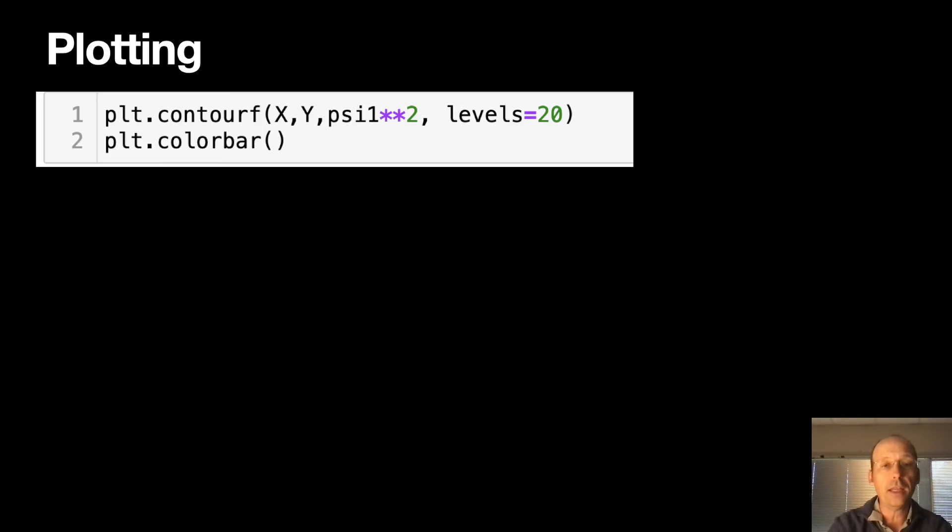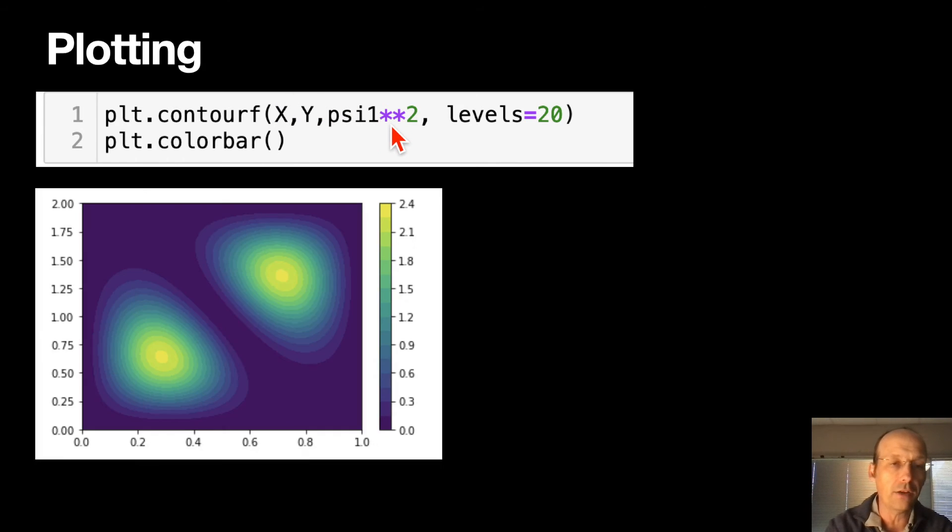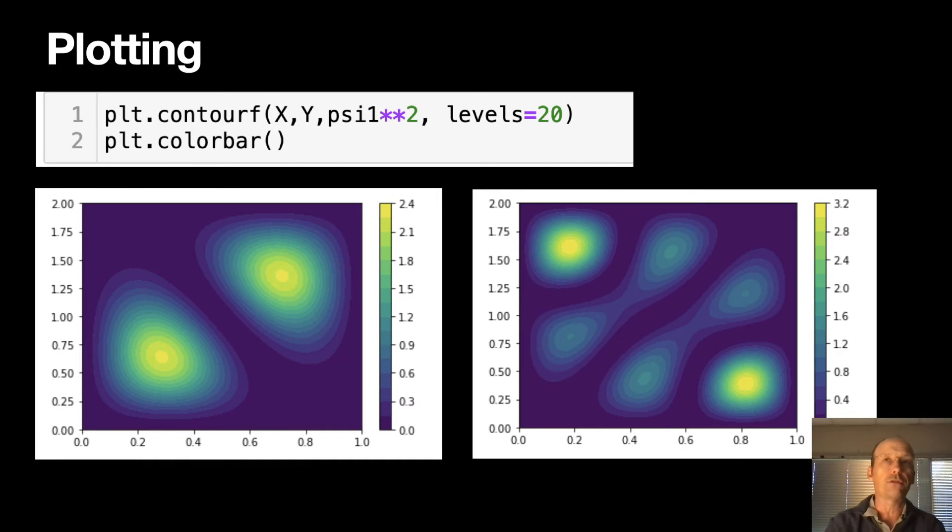And then we're going to plot it. This is x, y, psi 1 squared. And levels 20. Contour plot. That's the first solution. And then just for fun, here's another solution right there. But don't worry. And this is for the plain infinite square well in 2D, which we've already done.